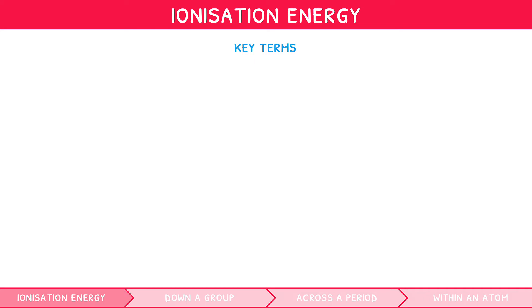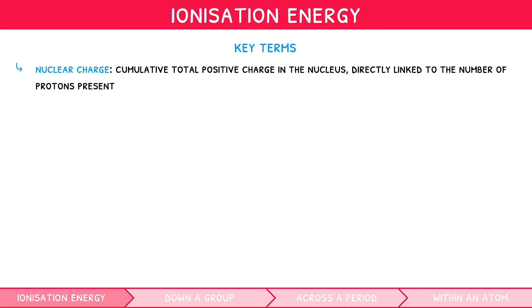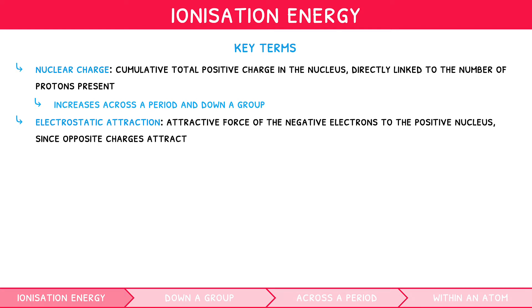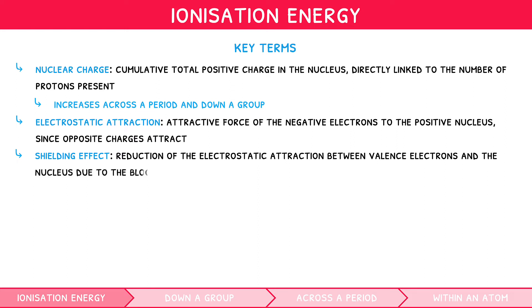There are three key terms we need to outline. Nuclear charge is the cumulative total positive charge in the nucleus, directly linked to the number of protons present — it increases across a period and down a group. Electrostatic attraction is the attractive force of the negative electrons to the positive nucleus, since opposite charges attract. The shielding effect is the reduction of the electrostatic attraction between valence electrons and the nucleus due to the blocking by inner electrons — it increases down a group but remains the same across a period.